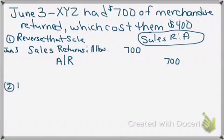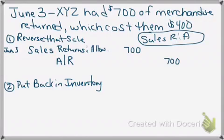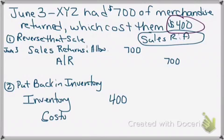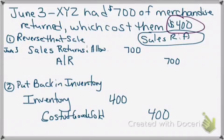Not only do I have to reverse that sale and put it into our sales returns account, I also need to put it back in inventory. So if I'm putting it back in inventory, that inventory account would be increased by the amount it cost me — four hundred dollars. The other side of that is going to be the cost of goods sold account for four hundred dollars, because it has to come out of cost of goods sold and go back into our inventory account.